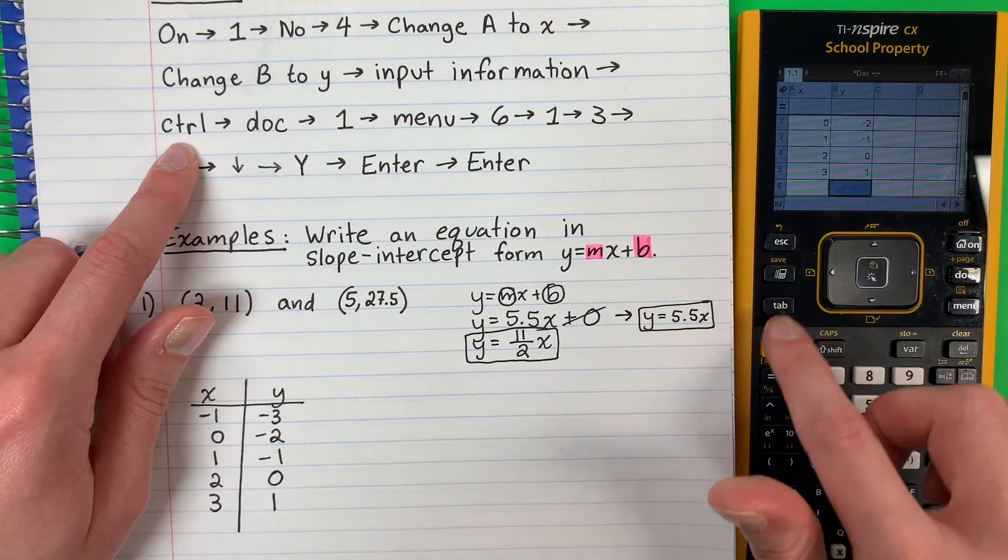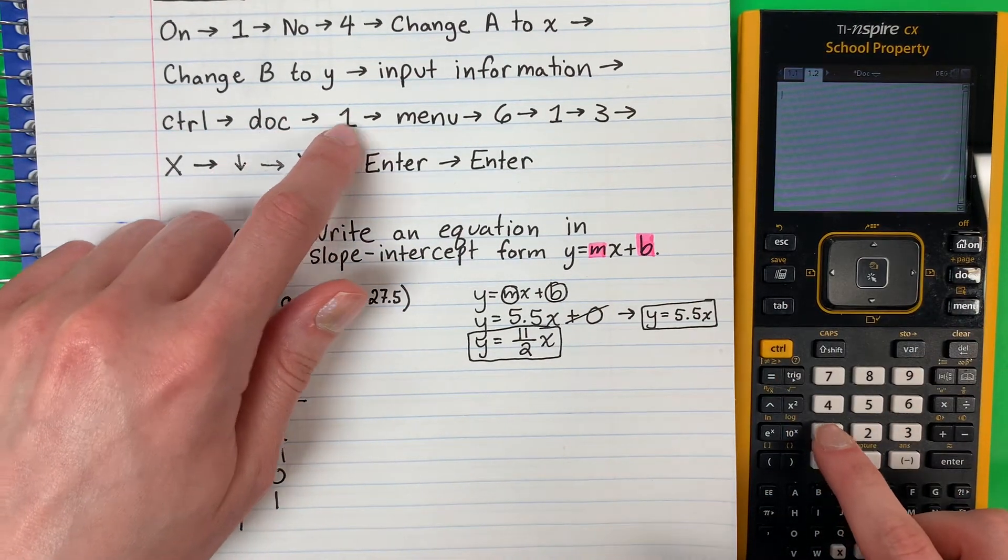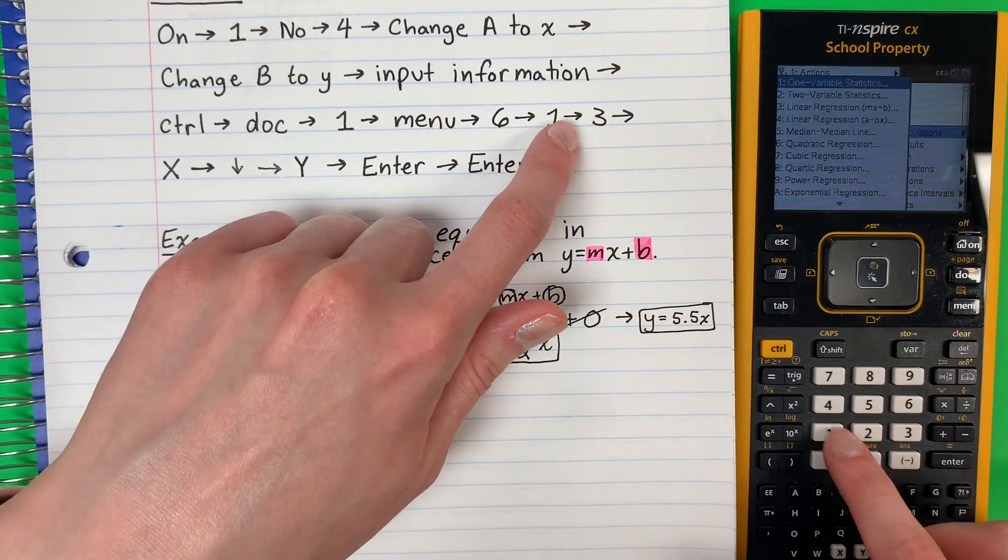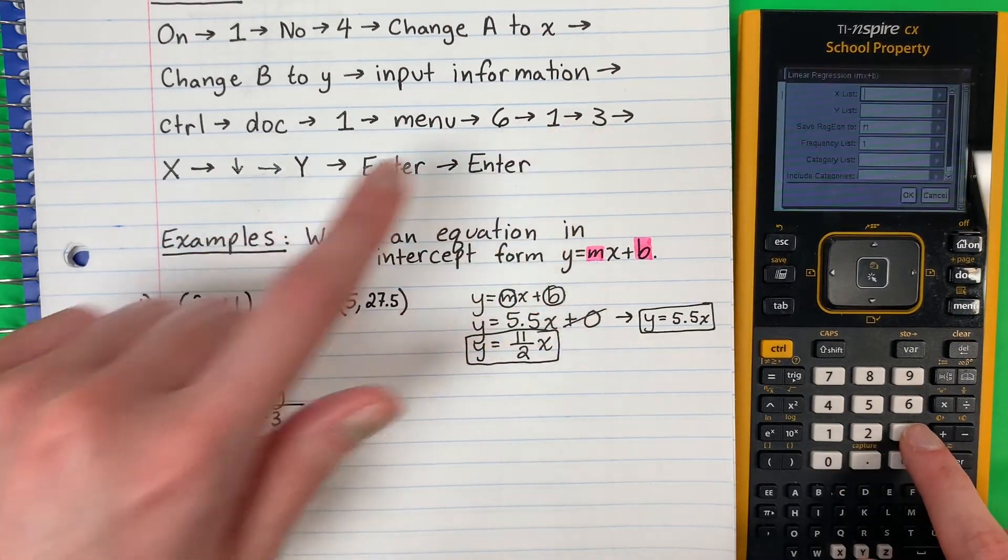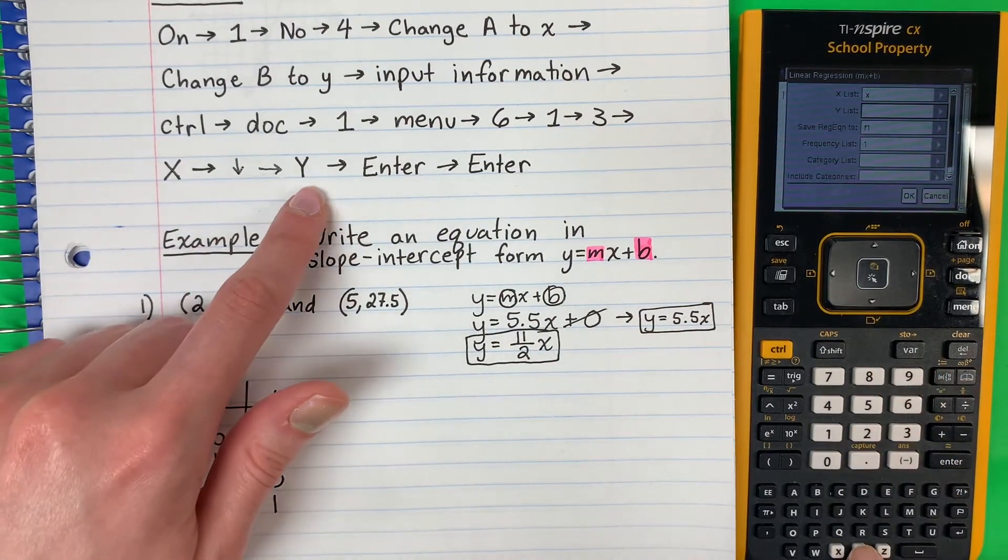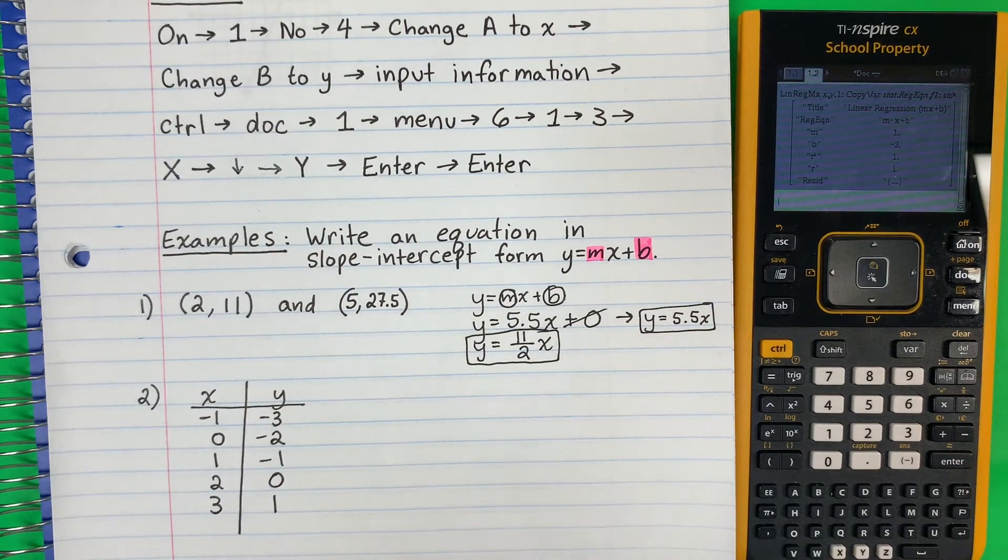Let's go ahead and do now. Control, dock, 1, menu, 6, 1, 3. X, down, Y, enter, enter. There we go.